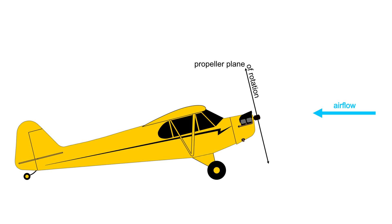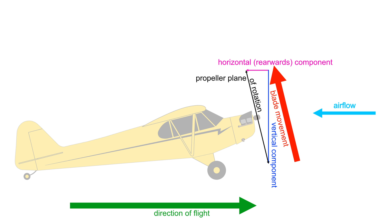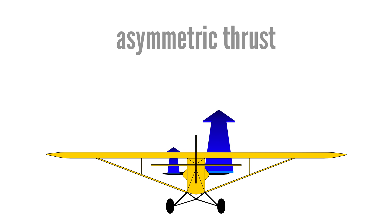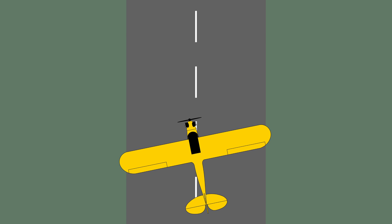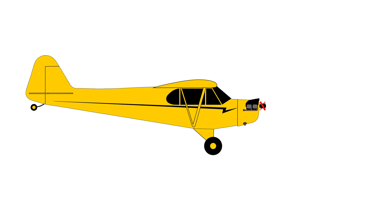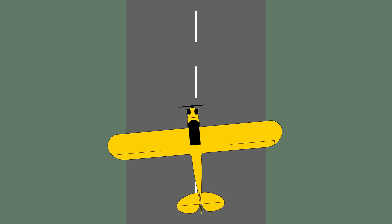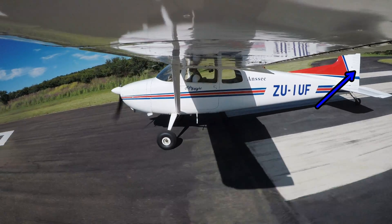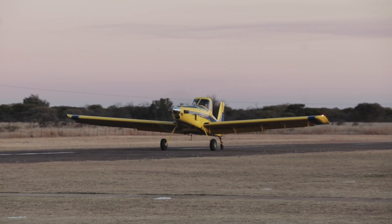In addition to the higher angle of attack, the downward-going blade also has a higher airspeed than the upward-going blade. Since the propeller's plane of rotation is tilted, the downward-going blade has a small forward velocity vector and the upward-going blade has a small rearward vector, making the thrust difference even greater. This asymmetric thrust results in a tendency to yaw the plane to the left, making p-factor the fourth and final left-turning tendency. The higher the nose attitude and the higher the power setting, the more extreme this left-yawing tendency will be.